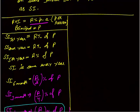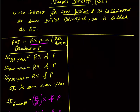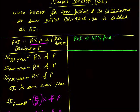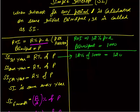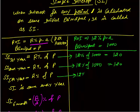Now a numerical example with the same variables. Let rate of interest = 12% per annum and principal = Rs. 1000. SI for the first year = 12% of 1000 = Rs. 120. Second year = 12% of 1000 = Rs. 120. Third year also = Rs. 120. So simple interest is the same every year.